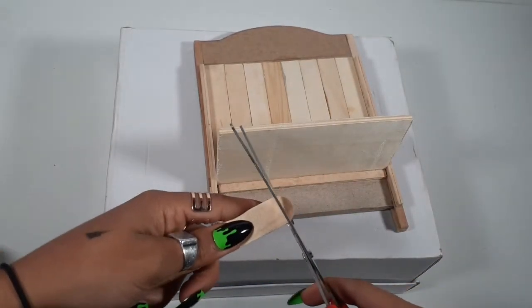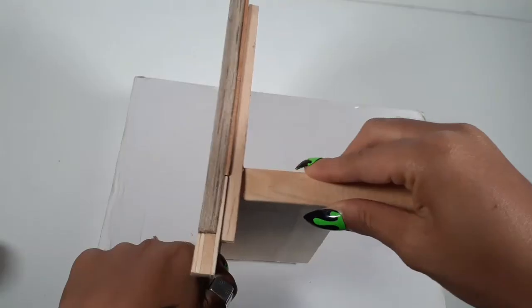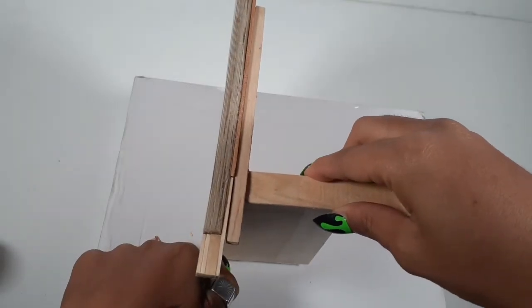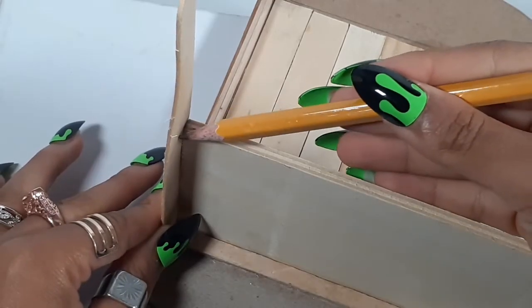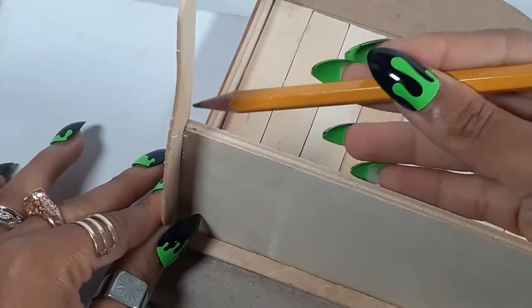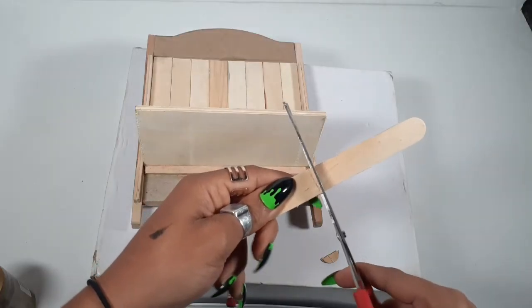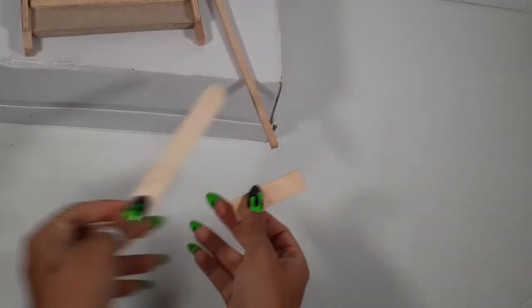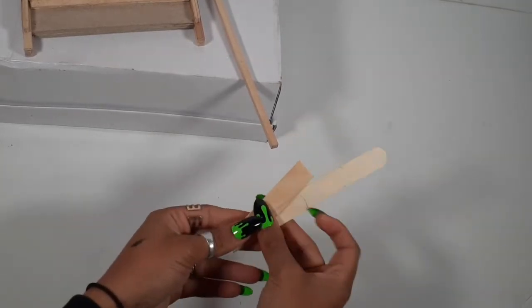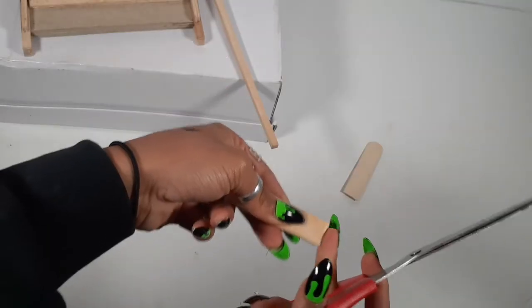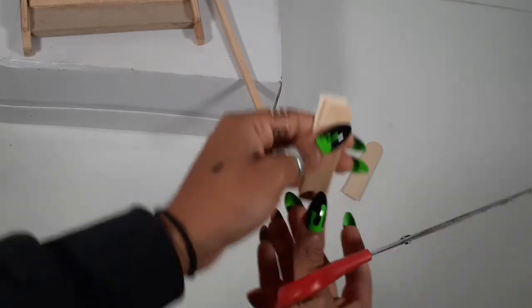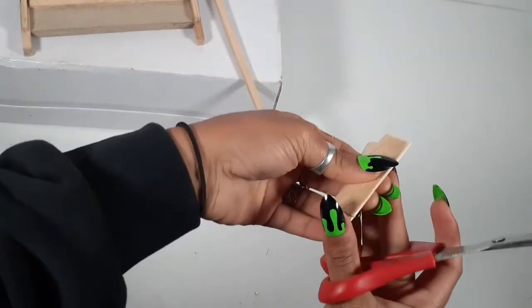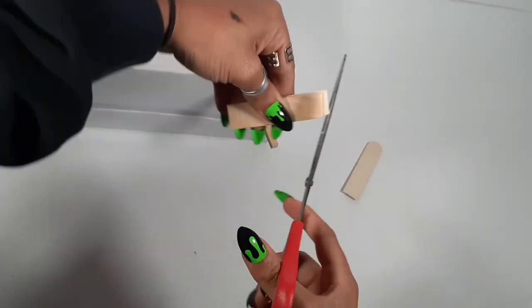Using more jumbo popsicle sticks, I'm going to be cutting the round edges off and then lining it up on the crib, making marks to know where I'll need to cut. To make sure everything lines up correctly, I'm going to be using the first one as a guide to cut the others, and then flip it over and cut the other side, making sure everything is lined up correctly.